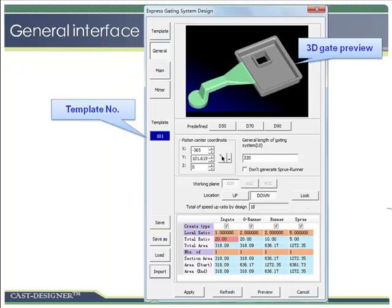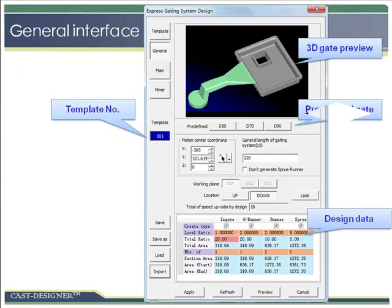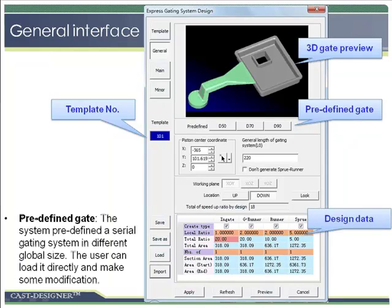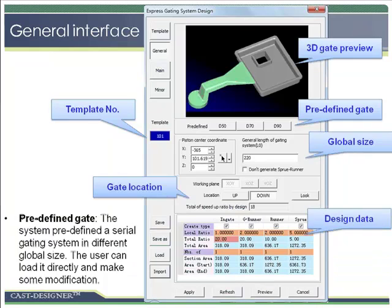The user can apply the design ratio to a new gating system directly. The system has several built-in predefined template data sets, which can be loaded with a simple click to speed up the data definition. The piston center and general length of the gating system can be defined and scaled automatically. The location of the inner gate can also be simply defined and modified with one click.